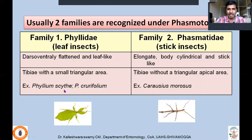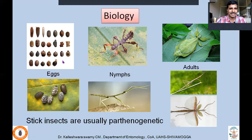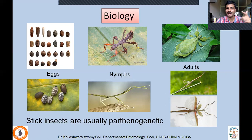Important species include Phyllium crurifolium for leaf insects, and Carausius morosus for stick insects. Try to remember the scientific names. Coming to biology, the eggs of stick and leaf insects are like seeds or nuts, very colorful and patterned. They hatch into wingless nymphs. In adults, you will find both apterous and alate forms. In stick insects especially, you will find both apterous and alate forms.